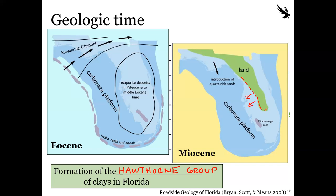Understanding the geologic map and that dividing line in Florida gives you baseline information on what to expect when investigating. The USGS and the Florida Geologic Survey have lots of information on the different formation types engineers will see. The Hawthorne Group is probably the most prevalent one, and we'll reference it throughout the semester.